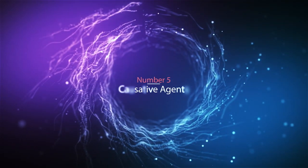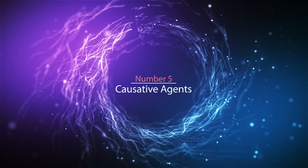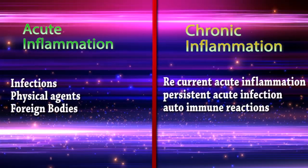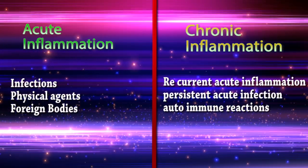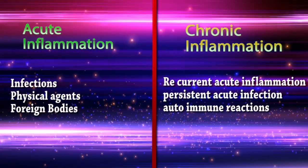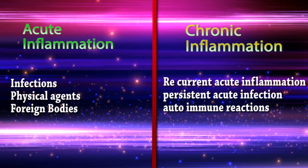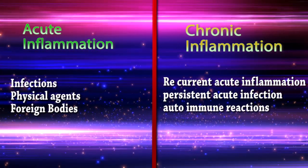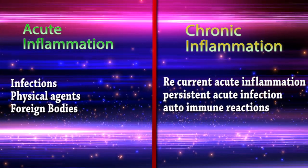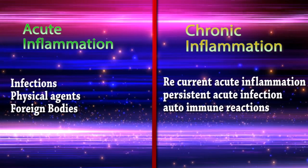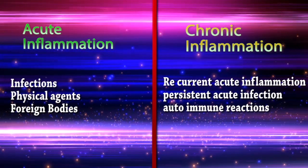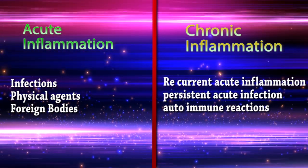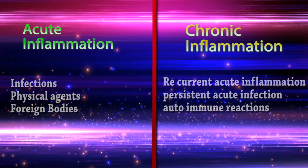Difference number five: causative agents. In acute inflammation, causative agents include infections, physical agents, and foreign bodies. In chronic inflammation, conditions occur because of recurrent acute inflammation, persistent acute inflammation, or autoimmune reactions.